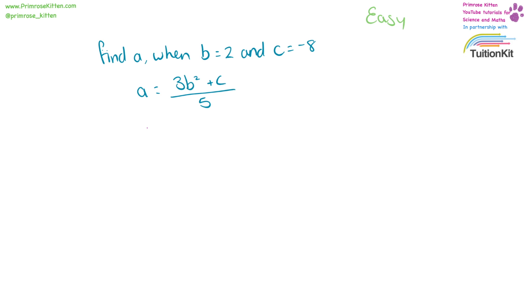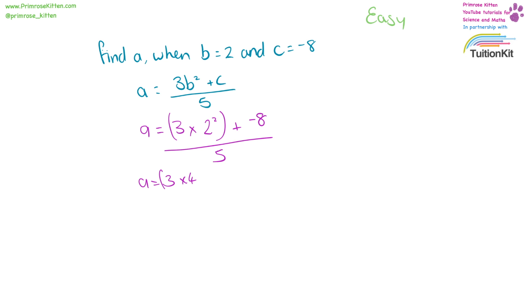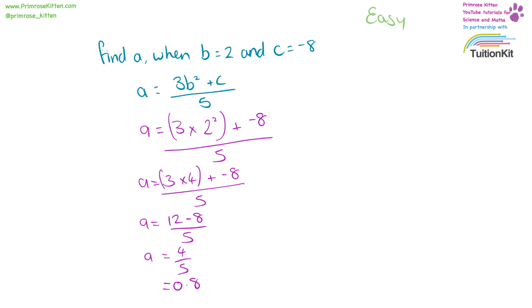Find a when b equals 2 and c equals minus 8. a equals 3 times b squared, which is 2 squared, plus c, which is minus 8, all divided by 5. a equals 3 times 4, which is 12, plus minus 8, divided by 5. 12 minus 8 is 4, divided by 5, which is 0.8.